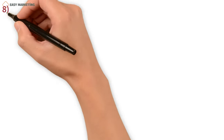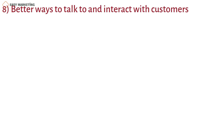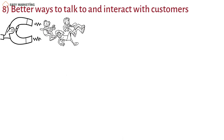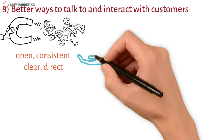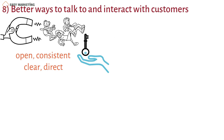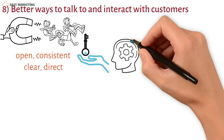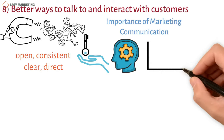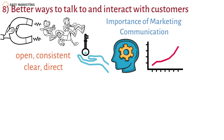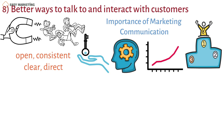Eight: better ways to talk to and interact with customers. To bring in new customers and keep old ones for the long term, marketing communication must be open, consistent, clear, and direct. It must also help solve problems that customers have. When the business's management and marketing department understand the importance of marketing communication, communication with customers automatically gets better, and customers' trust in the brand, its products, and the company as a whole goes up, making it easier for the business to reach its goals.